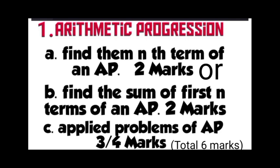First chapter: Arithmetic Progressions. Finding the nth term of an arithmetic progression carries two marks, or finding the sum of first n terms of an arithmetic progression carries two marks — either A or B, one question will come. Another question has three or four marks for applied problems of arithmetic progression. Total six marks are allotted to this chapter.